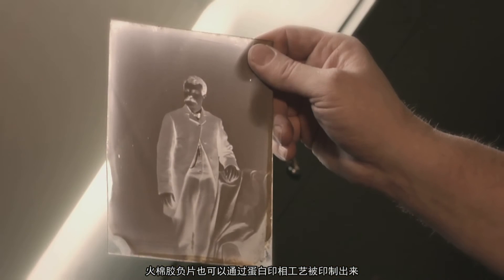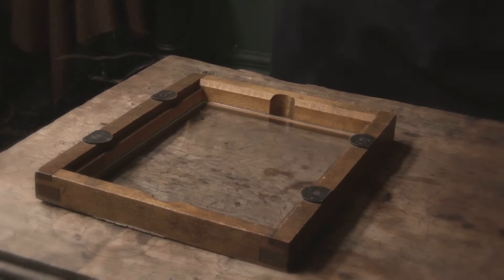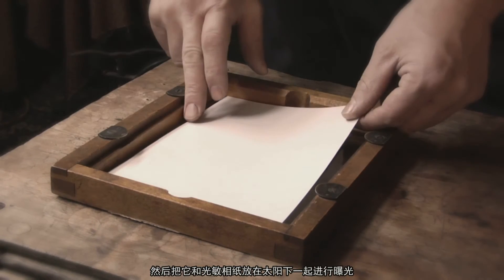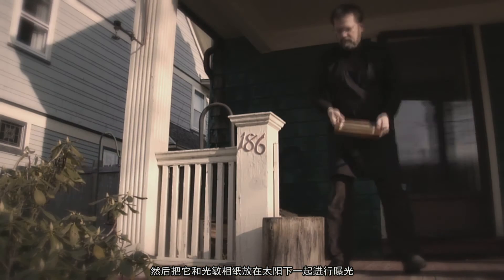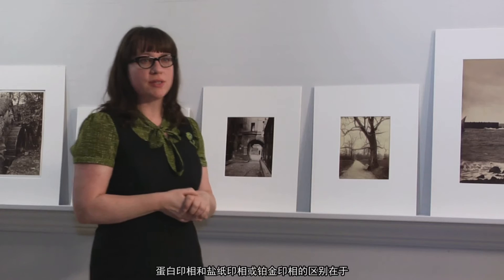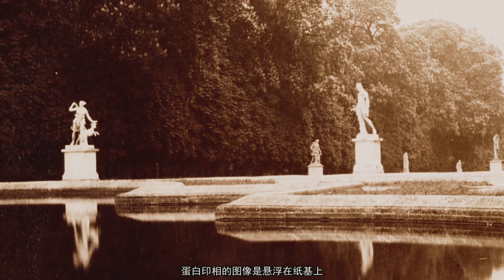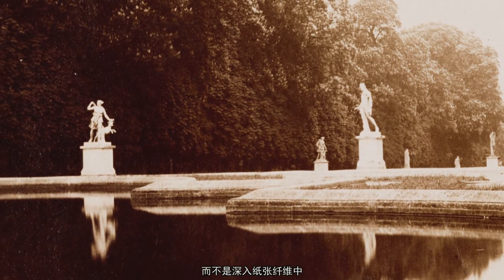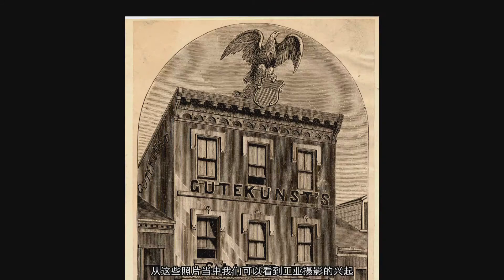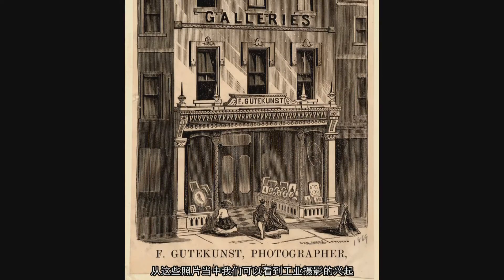A collodion negative could be printed as an albumin print. You would have your negative and you would place it in contact with the sensitized paper and expose it with sunlight. The thing that distinguishes an albumin print from a salted paper print or a platinum print is that the image is suspended on a layer above the paper rather than being embedded in the paper fibers, creating a much more precise and crisp image.